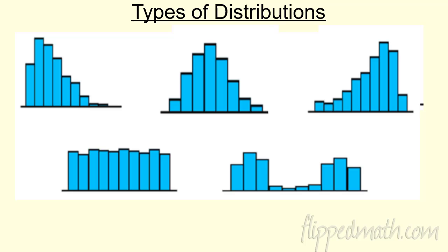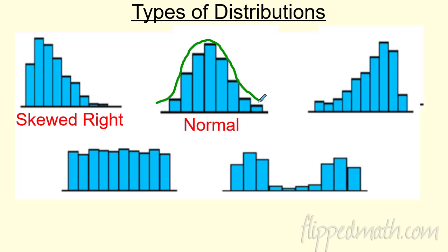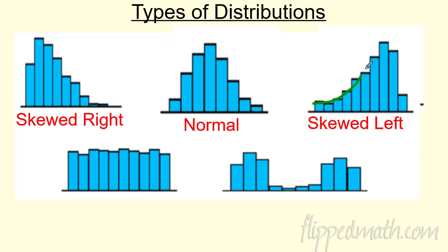So we need a way to categorize these and talk about types of distributions. Let's label them. This first graph we describe as skewed right — you see how it starts big and tapers off to the right. Where it gets smaller is where we're skewed to. If it's symmetrical, up and down, like a normal bell-shaped curve, we call that a normal distribution. And this one — see how the small part's to the left and the big part's to the right — that's skewed left.